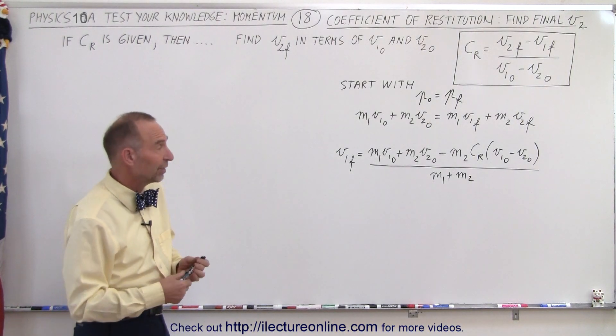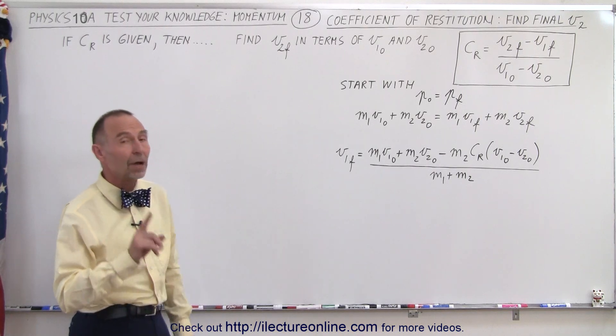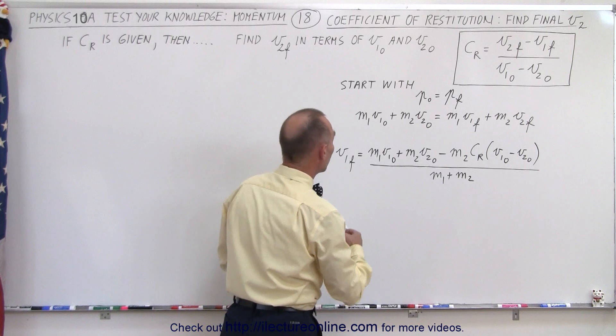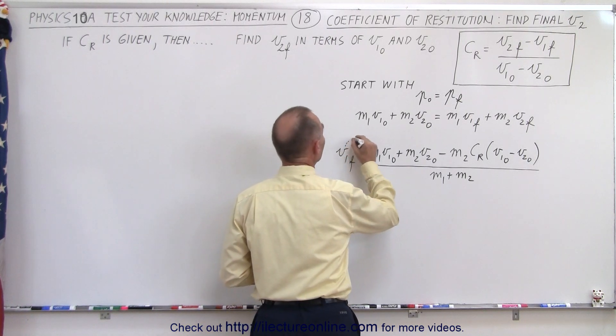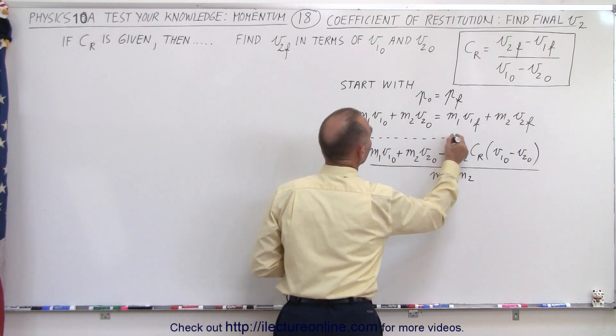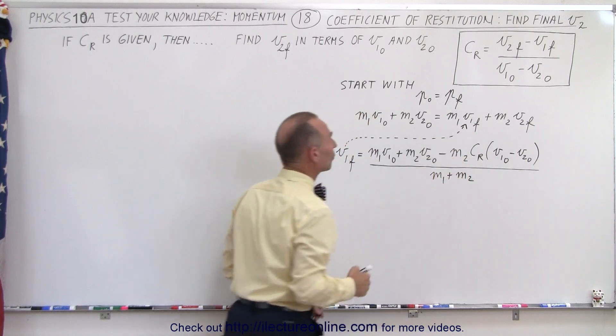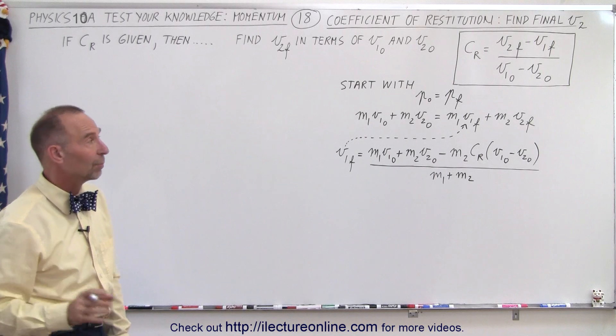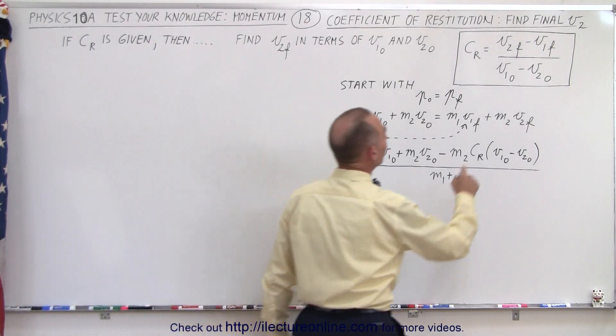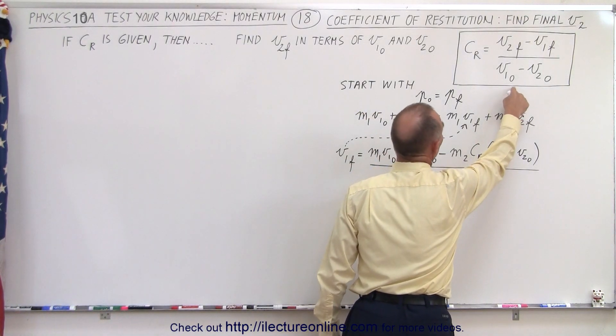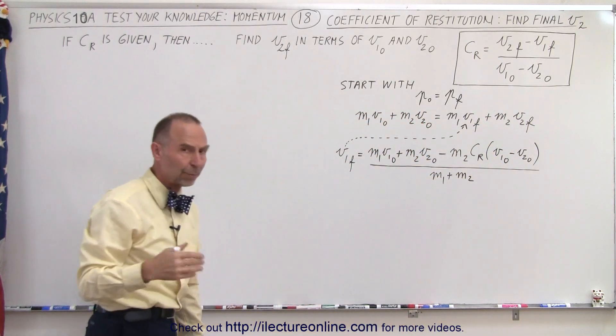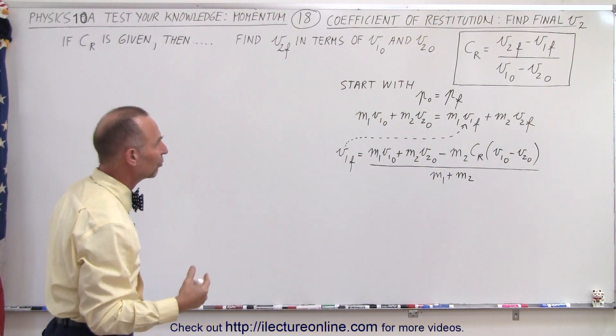And of course the method will be the same. However, once we find an equation for V1 final, we could potentially take this and substitute that into this equation right here and then solve for V2 final. We could do that, or we can do the same as what we did before. We can solve this equation for V1 final and substitute it in here and then see what we get. And that's probably the easiest way to go. So let's do that instead.